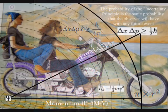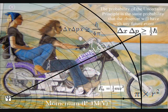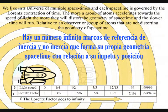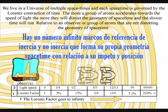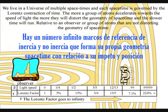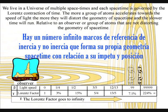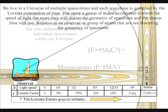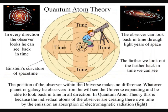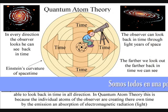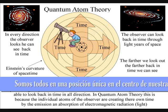In this theory there is no universal time, because the universe is made up of an infinite number of reference frames that have their own proper time relative to their momentum and position. Therefore we are all in a unique position at the center of our own reference frame and can look back in time in all directions at the beauty of the stars.